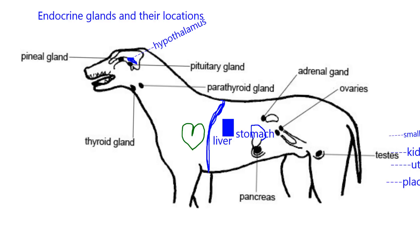The stomach ends and then there's a loop of small intestine connected to it. As ingested food leaves the stomach, it goes into this first loop of the intestine — and that's where the pancreas is located. The pancreas is always located in the first loop of the small intestine near the stomach. We should also know that the small intestine is a releaser of hormones, so it is also endocrine tissue.